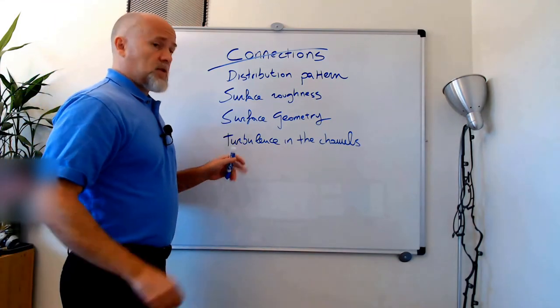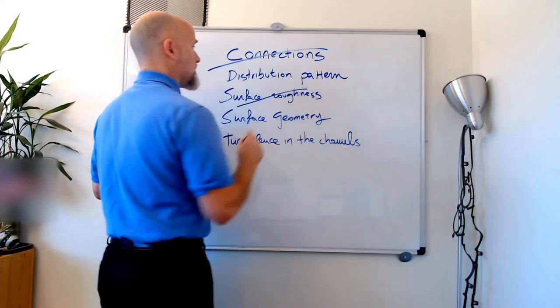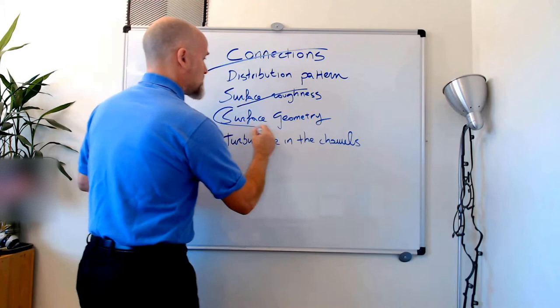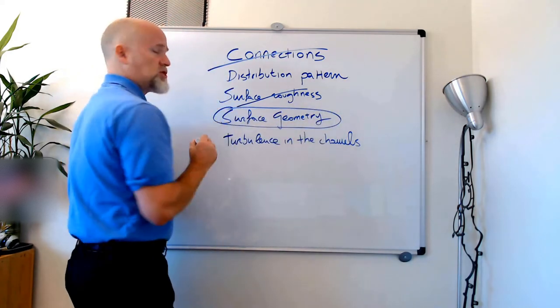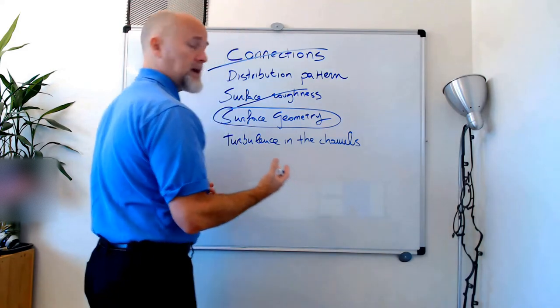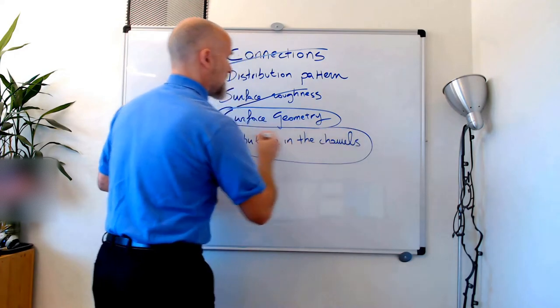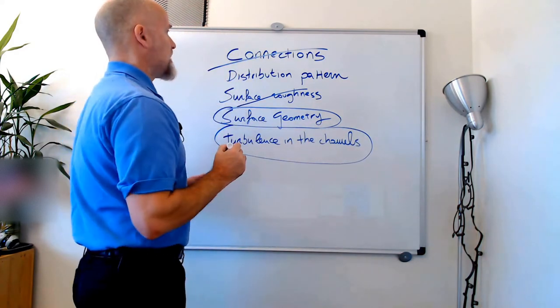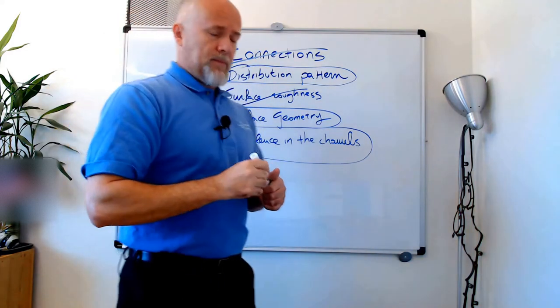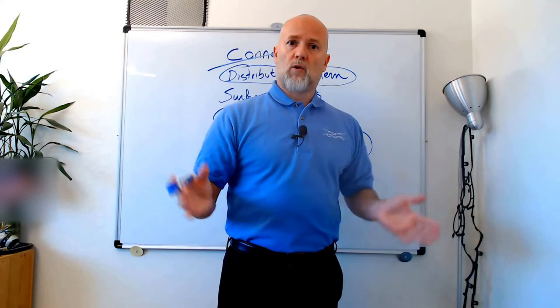You don't want loss of pressure drop because of the roughness of the plates, but you want pressure drop based on the geometry, assuming it's a modern geometry that facilitates the shear stress. You definitely want turbulence in the channels and equally you want a modern distribution pattern that covers the whole plate with the fluid.